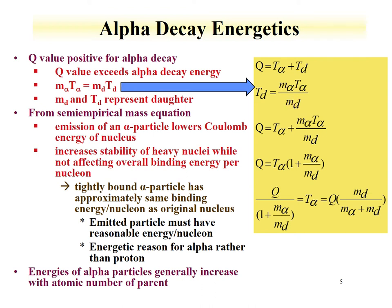We can substitute into the Q value equation and get a relationship in terms of the kinetic energy of the alpha, mass of the alpha, and mass of the daughter. Rearranging, we get the final relationship: the kinetic energy of the alpha particle equals the Q value times the mass of the daughter divided by the mass of the alpha particle plus the mass of the daughter. From this equation, the bulk of the kinetic energy is taken up by the alpha particle, so the Q value is often close to the alpha decay energy.